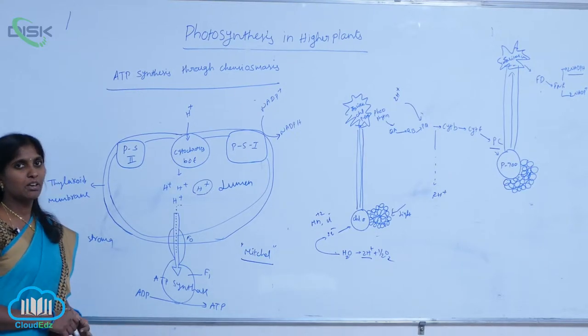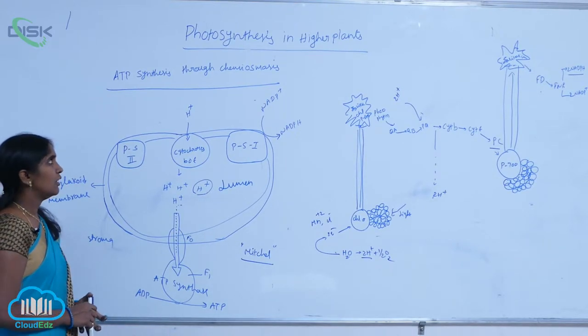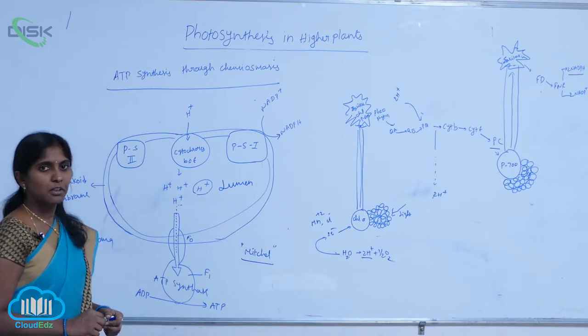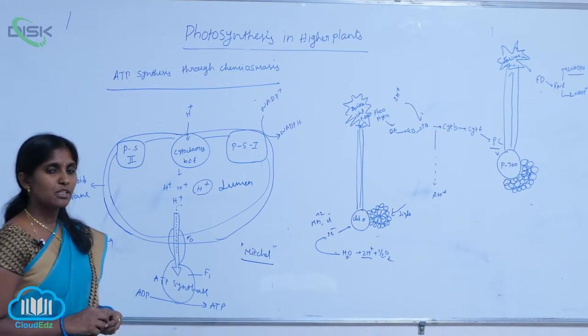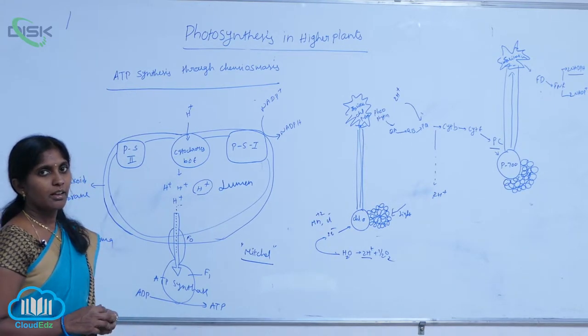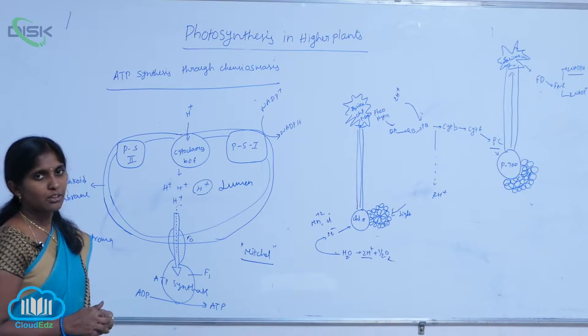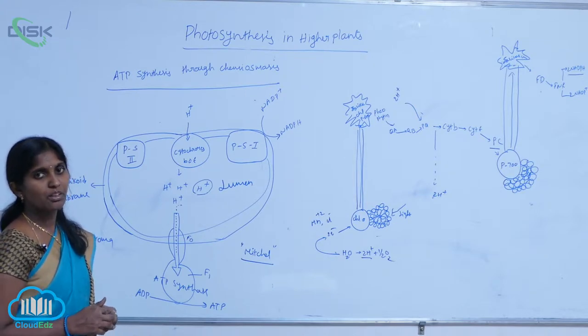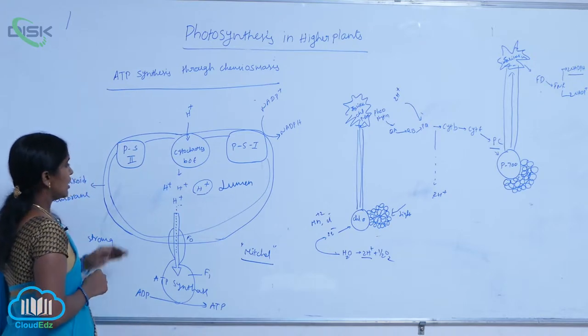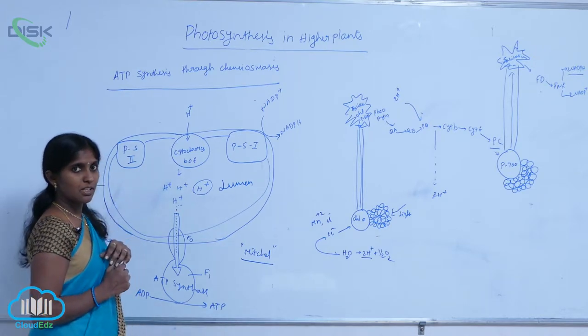ATP synthesis through chemiosmosis. The chemiosmotic theory was proposed by scientist Mitchell. According to chemiosmotic theory, ATP synthesis is occurring. How does ATP synthesis take place?